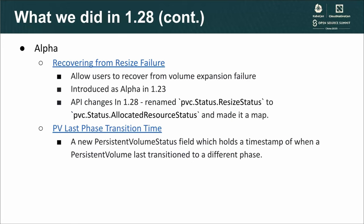In 1.28, we also worked on some alpha features. Recovering from resize failure is a feature that was introduced as alpha in 1.23 release. It allows users to cancel previously issued volume expansion requests, assuming that they are not yet successful or have failed. It also allows users to retry expansion requests with a smaller value than the original requested size in PVC spec resources, assuming that the previous requests are not yet successful or have failed. In 1.28, we made some API changes. We renamed the resize status in PV status to allocatedResourceStatus to make it more general and made it a map, so that it can be used for other cases such as the new volume attributes class feature that Michelle will discuss later.